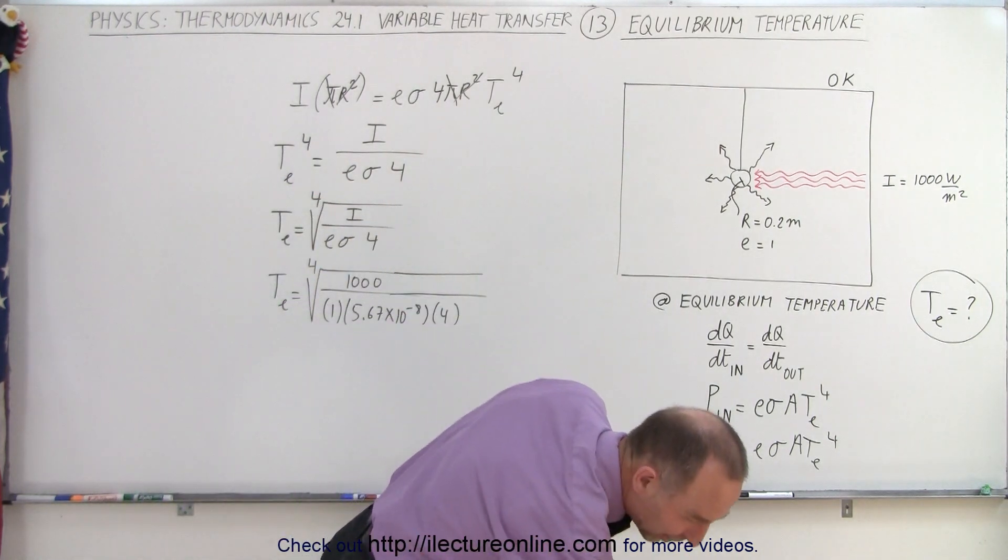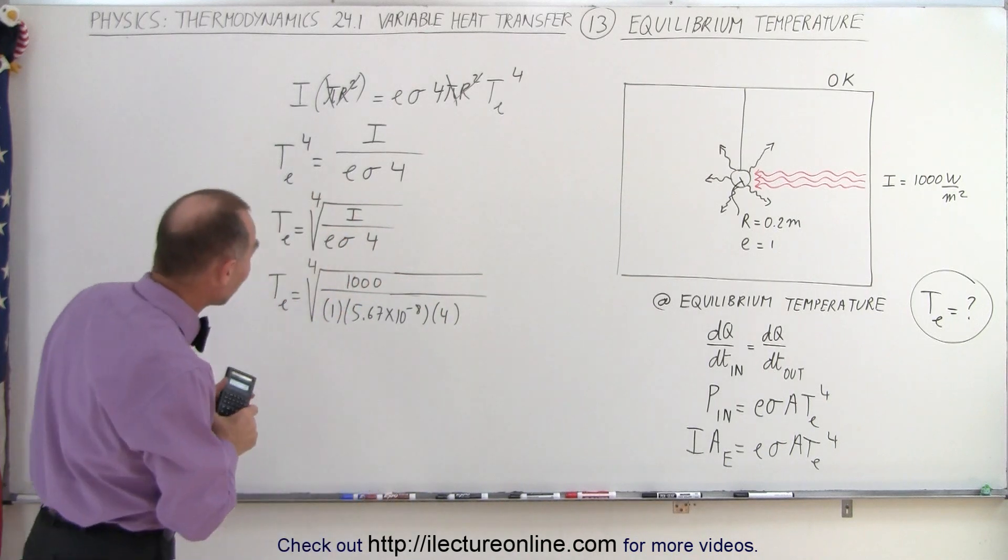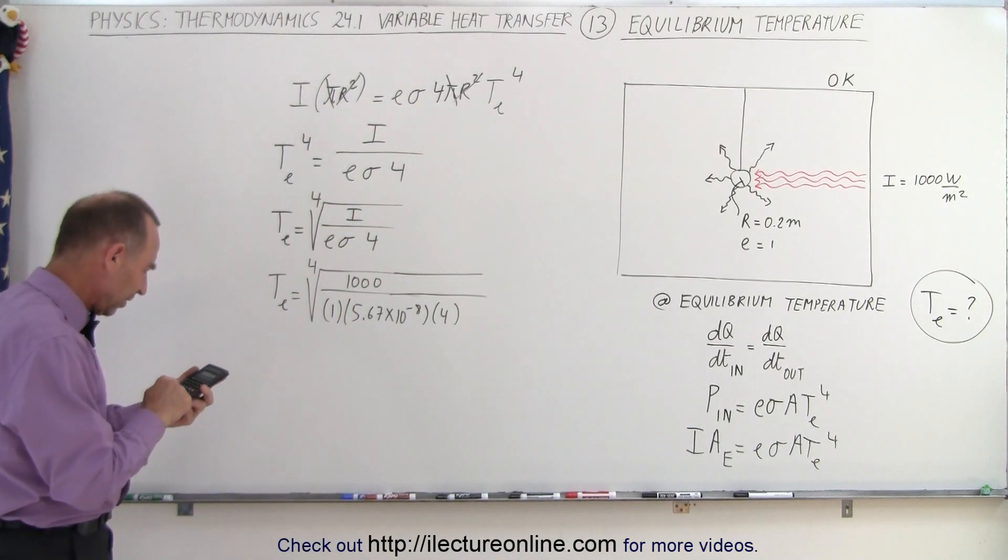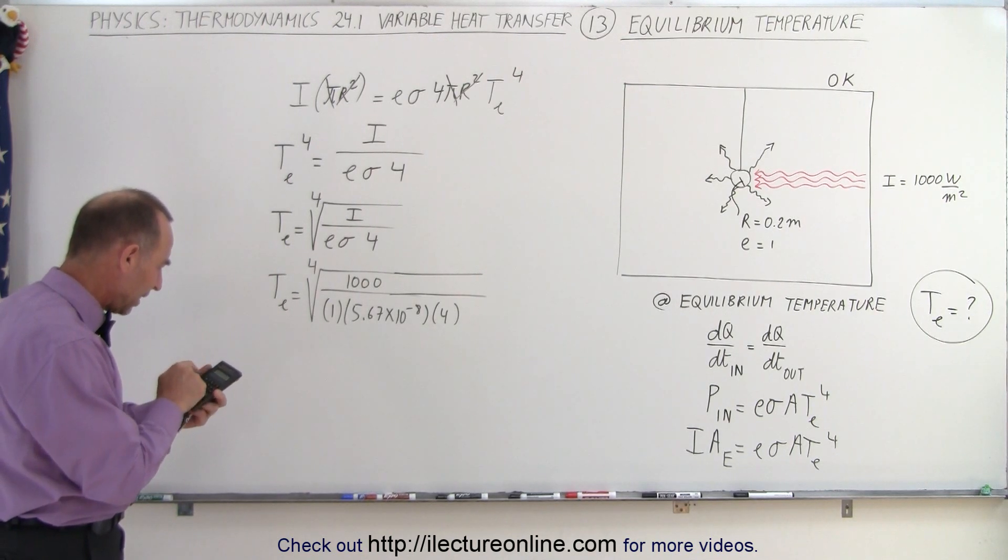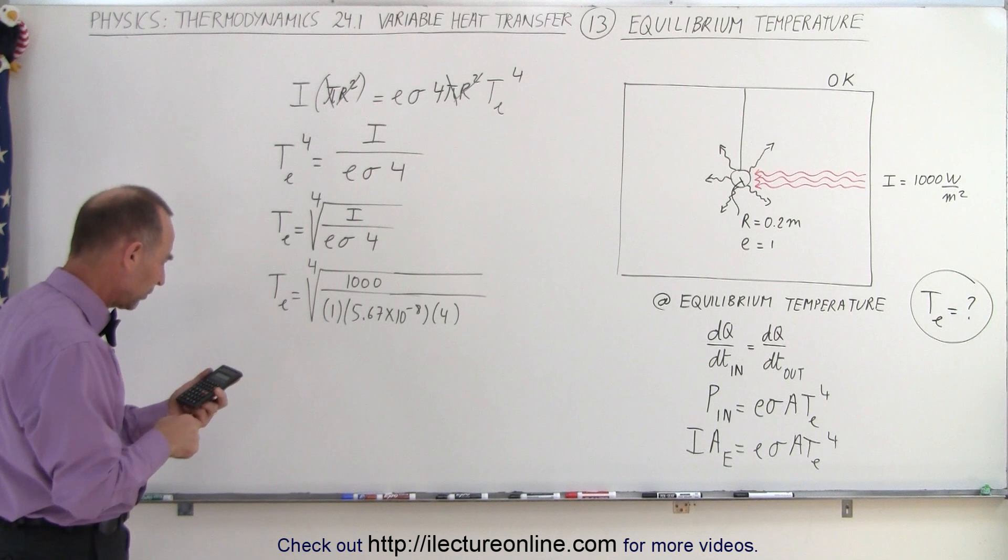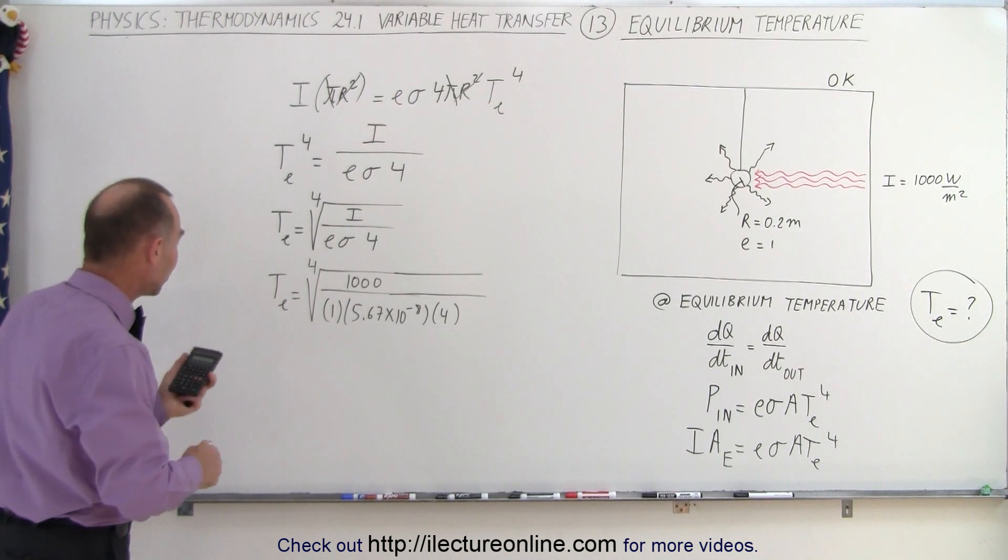We can grab the calculator and see what we're going to end up with. So 1,000 divided by 5.67 E to the minus, divided by 4 equals. Now we take the square root and we take the square root again. And we get a temperature of equilibrium temperature of about 257.7 Kelvin.